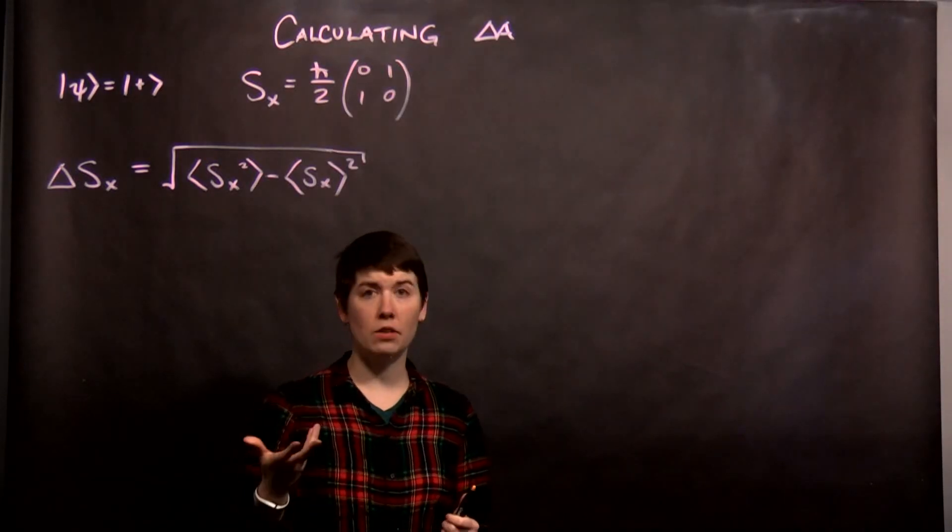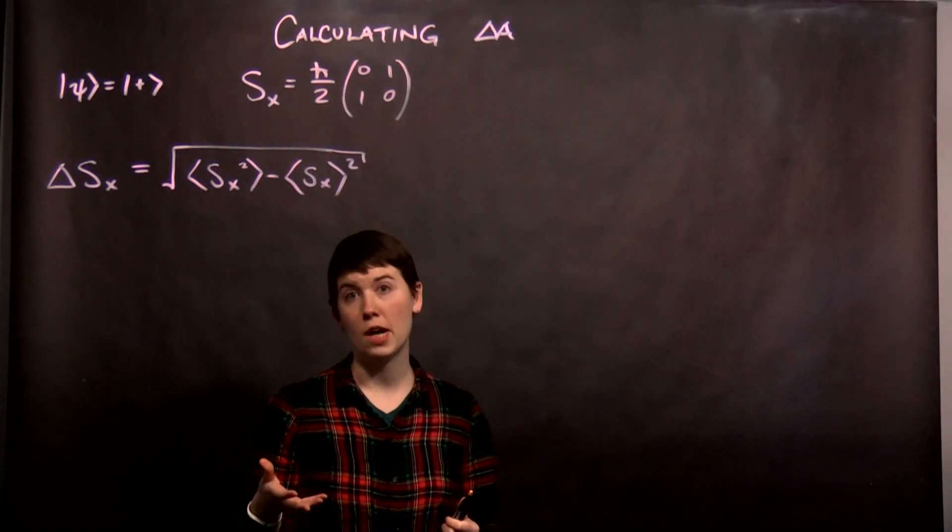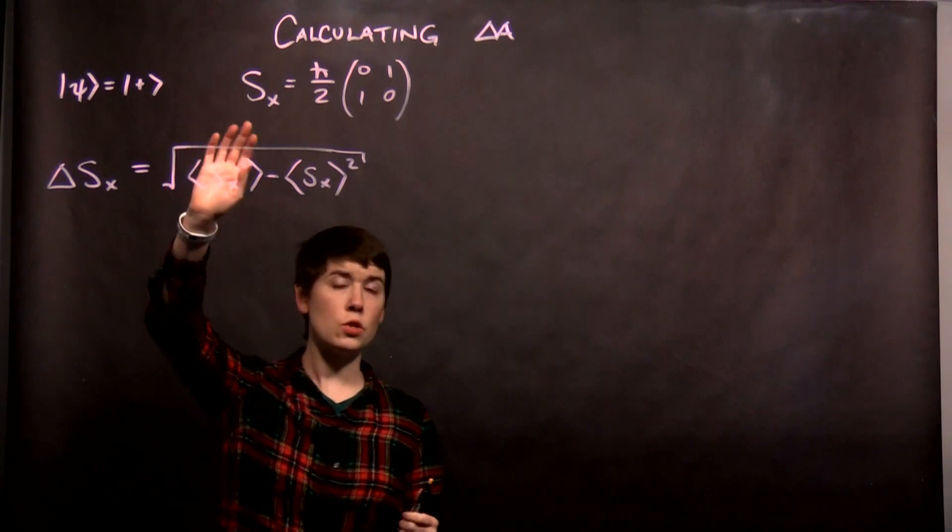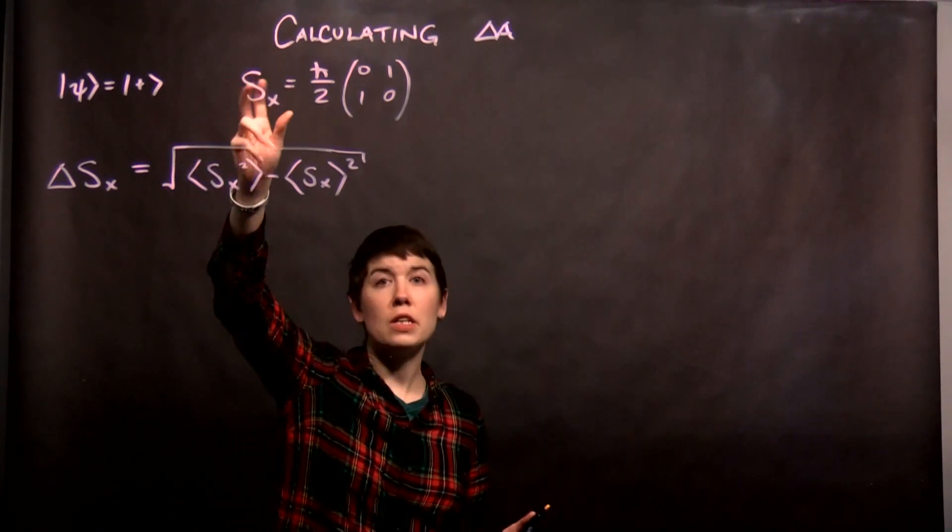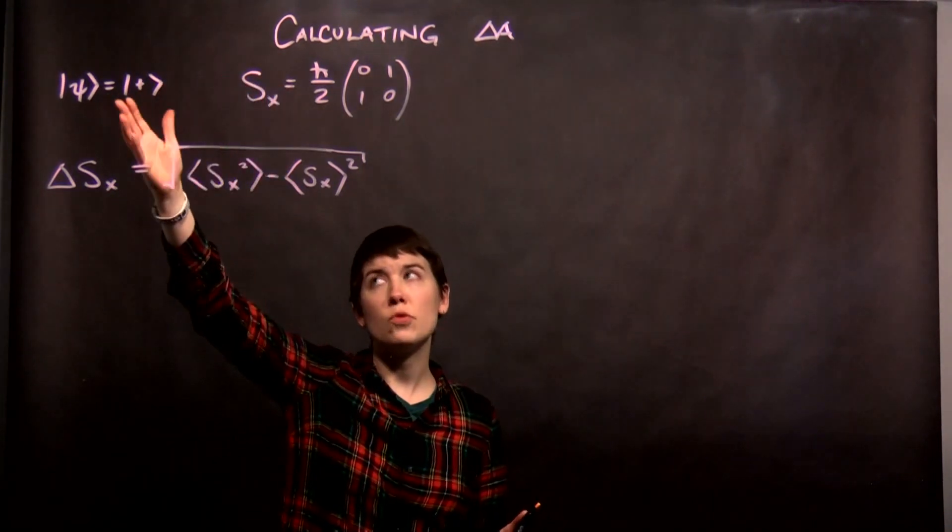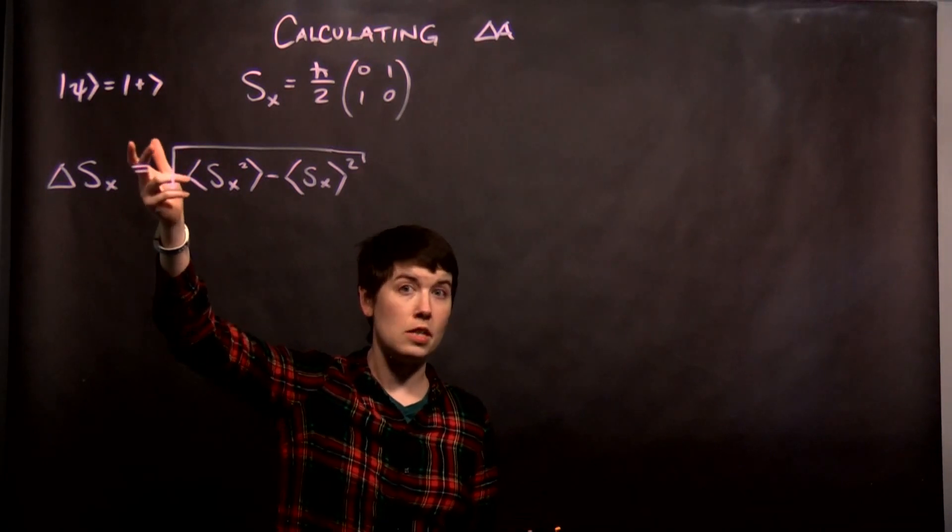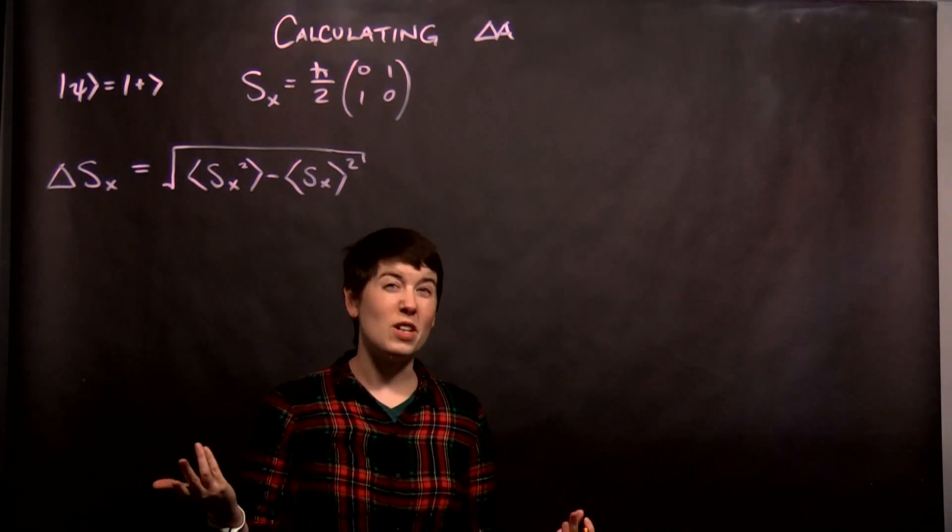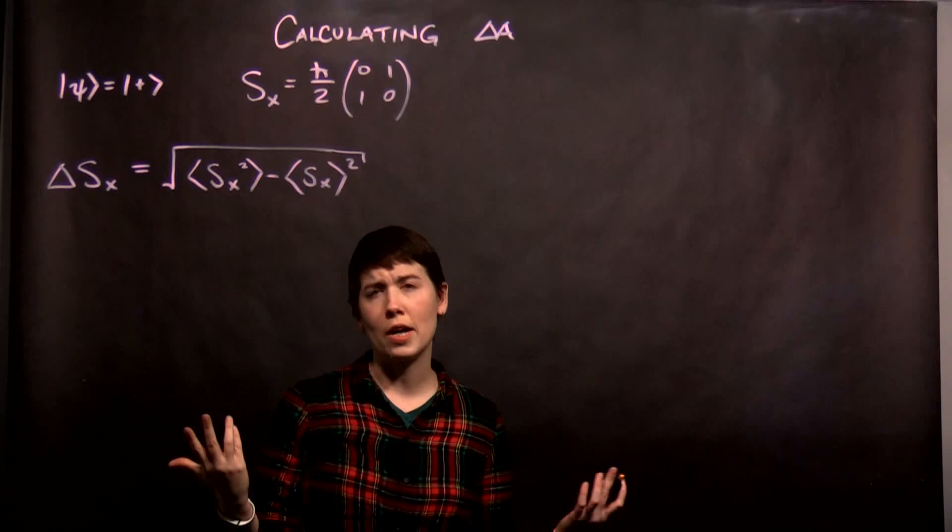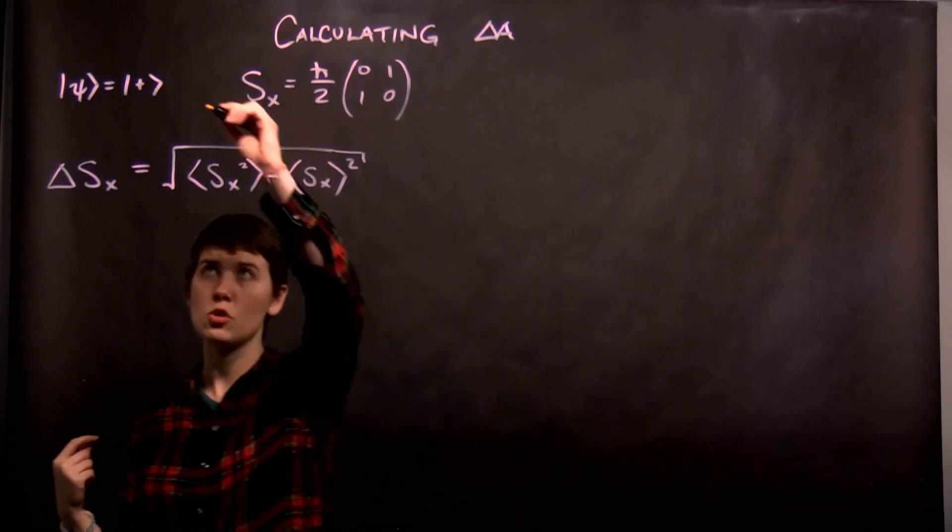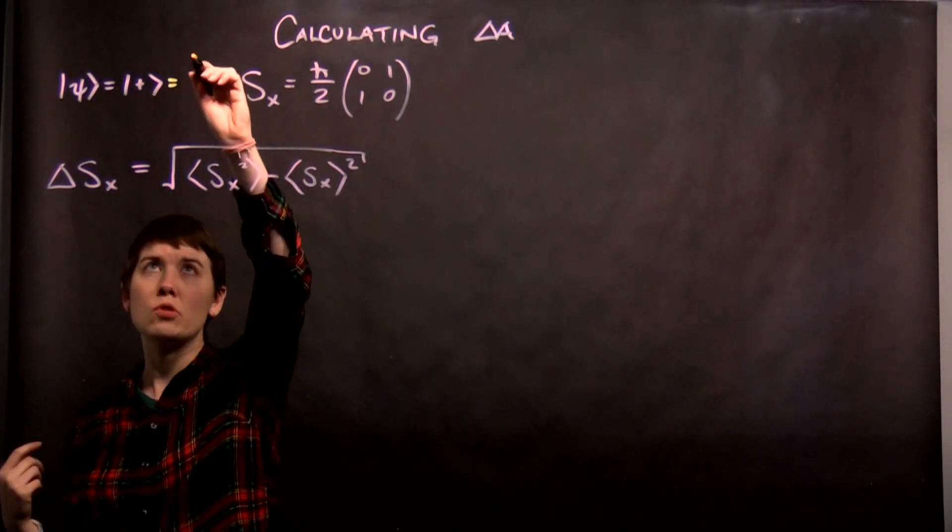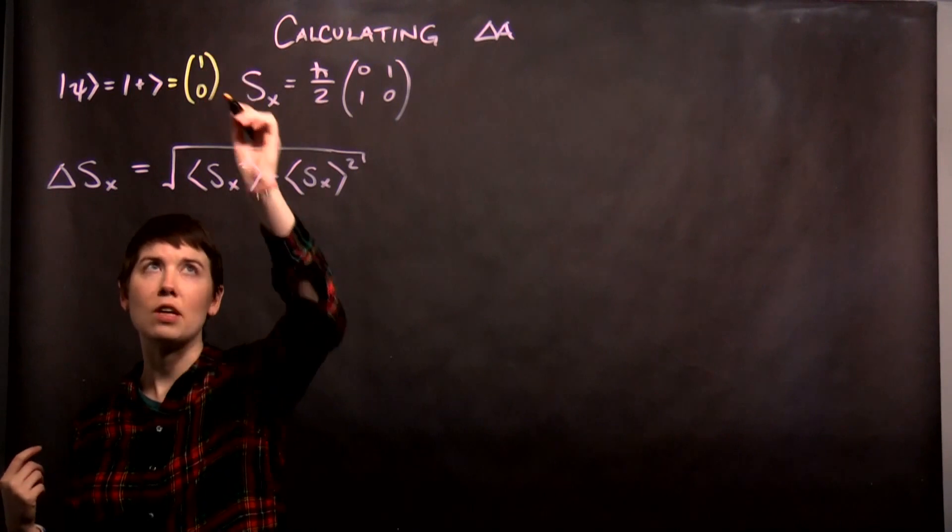I'm going to go through an example of calculating the RMS uncertainty for an operator. In this case I'm going to use my spin in X operator and I'm going to be using a state which is spin up in Z. And let's do this in matrix notation. So in matrix notation we have 1-0, we're working in the Z basis.